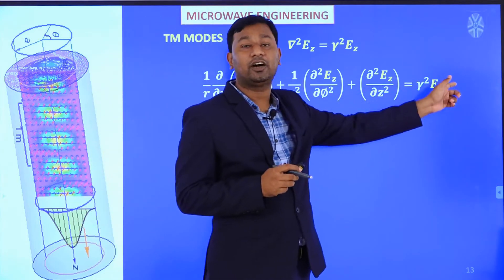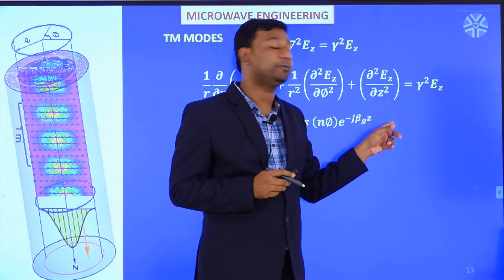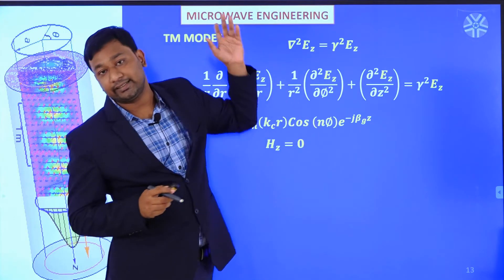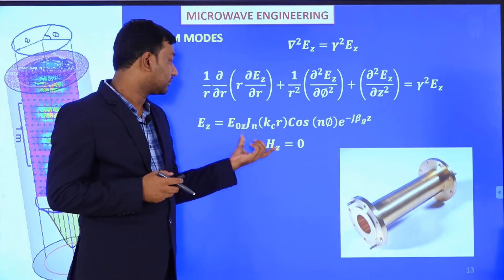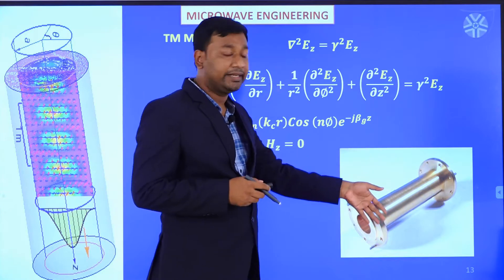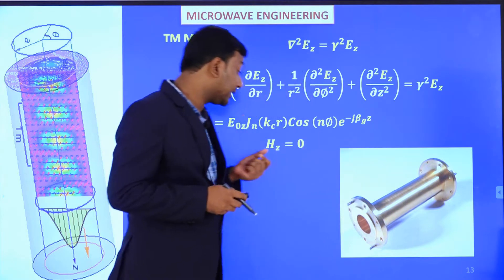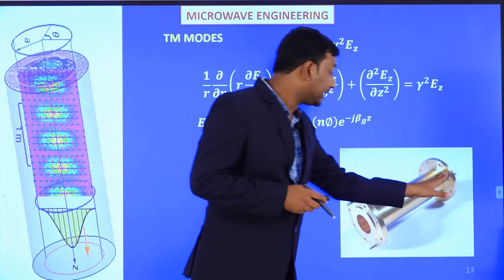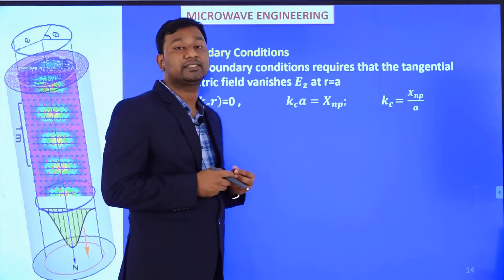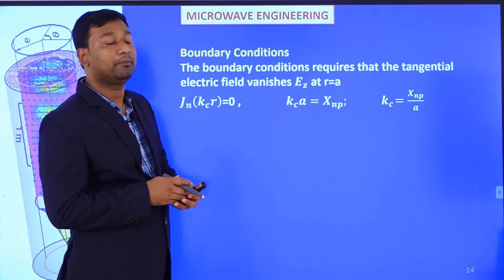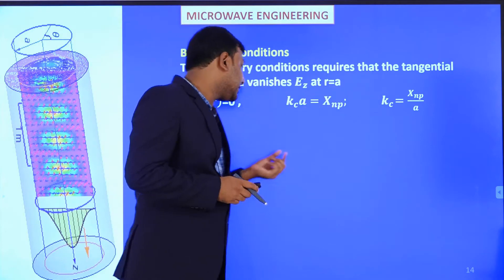Using the wave equation solution method from the first lecture, we substitute Ez and solve using similar steps. The result is Ez equal to E-naught times Jn(kc·r) cos(nφ) times e to the power minus j·beta·z, and Hz equals zero, since these are transverse magnetic modes, where Jn is the Bessel function of the first kind. Applying boundary conditions for the circular waveguide, the tangential electric field must vanish at r equal to a, so Ez equals zero at r equal to a.